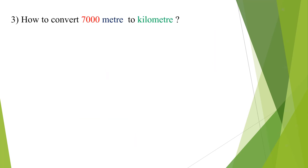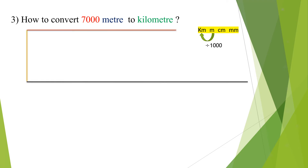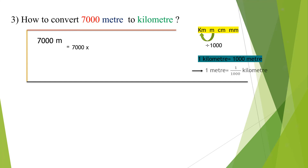How to convert 7000 m to km? To convert m to km, divide the meter length value by 1000. 7000 m is equal to 7000 × (1/1000) km, that is 7000 divided by 1000. 1000 sevens are 7000, so we get 7 km.